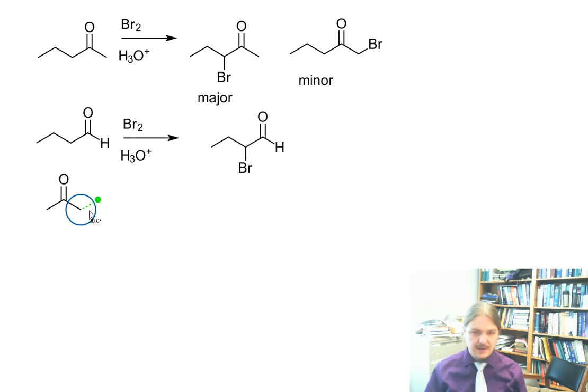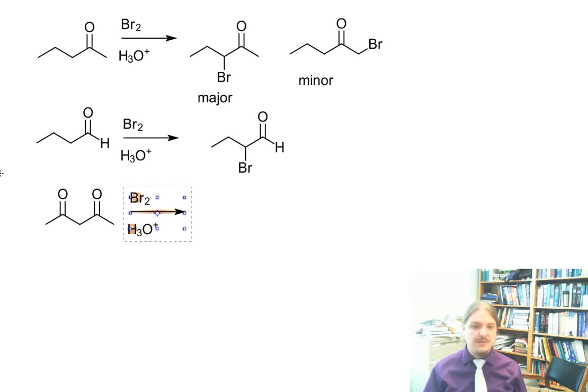So let's see, and you can end up with the most stable enol, which would be the enol in the middle of the two carbonyl groups. There we go.